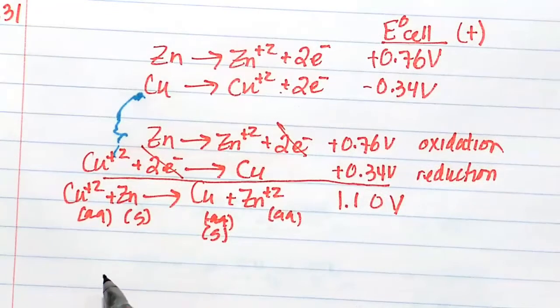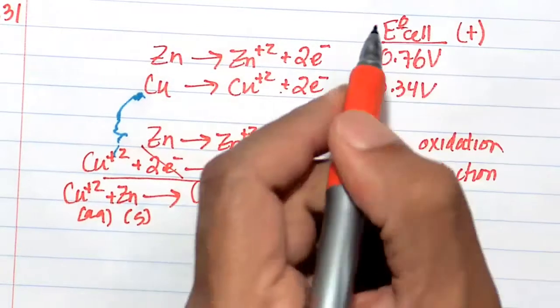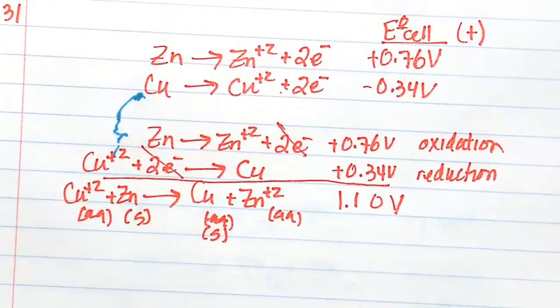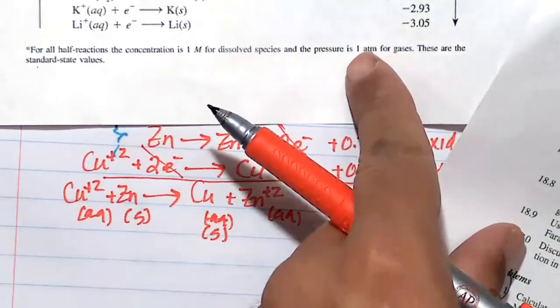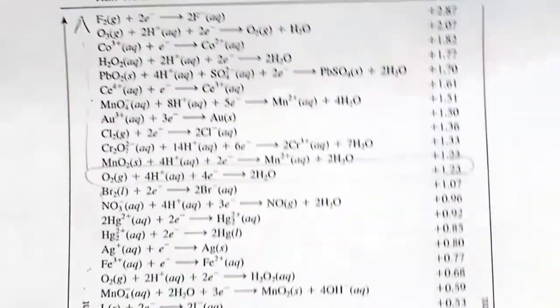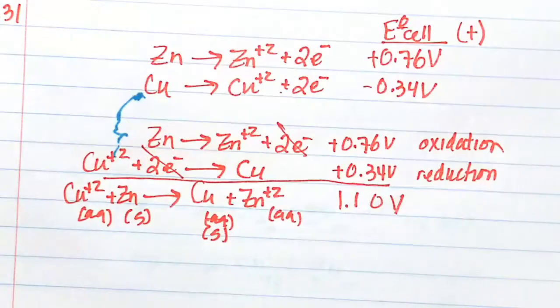Here is our equation under standard state conditions. Remember standard state—you have that superscript naught, a very specific set of conditions: one molar, one atmosphere for gases, 25 degrees C. Do not confuse this with non-standard state.